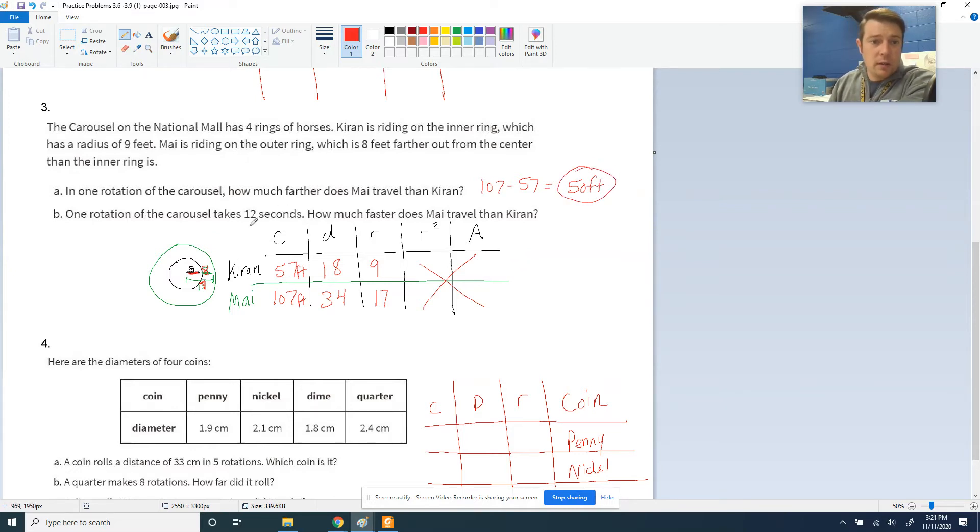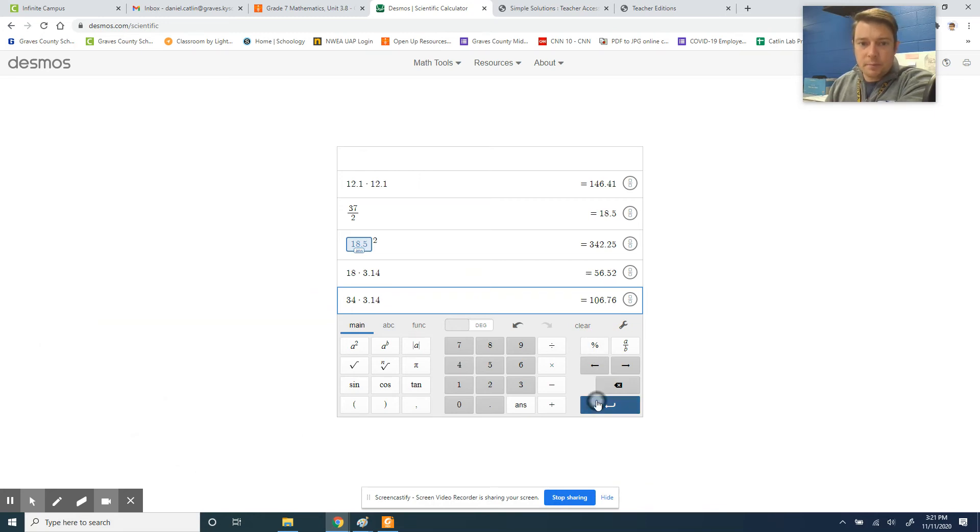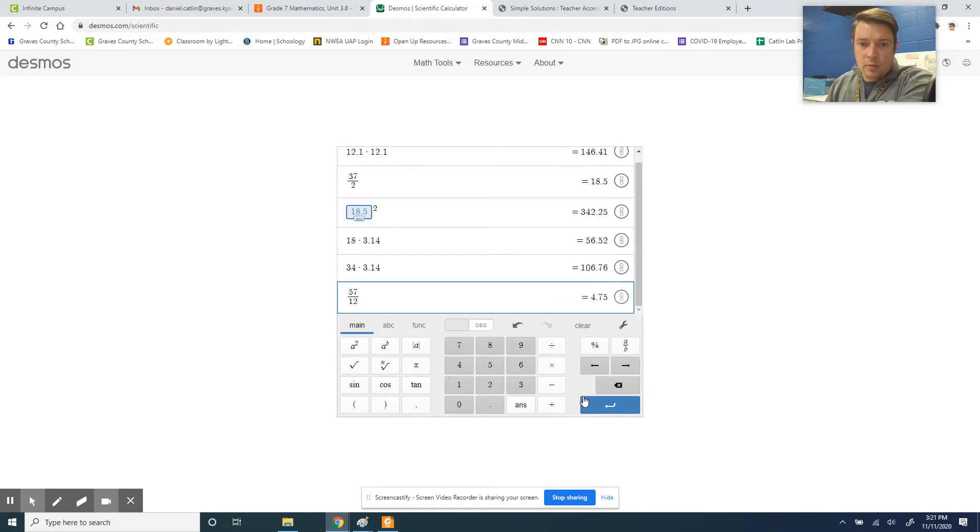Now in one rotation of the carousel, it takes 12 seconds. So that means that Kieran is going 57 feet per 12 seconds, and May is going 107 feet per 12 seconds. The question is how much faster is May than Kieran? The inner ones go slower than the outer ones because they got more space to cover, so they're traveling more distance in less time. We're trying to figure out how much faster. So we got to divide both of our numbers by 12. 57 divided by 12, and 107 divided by 12.